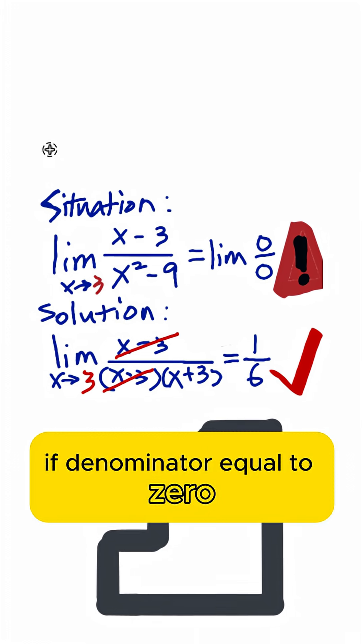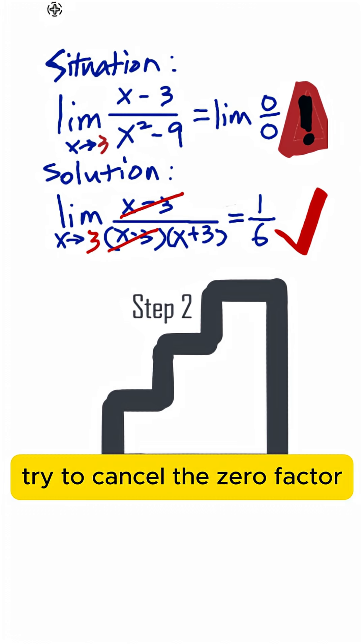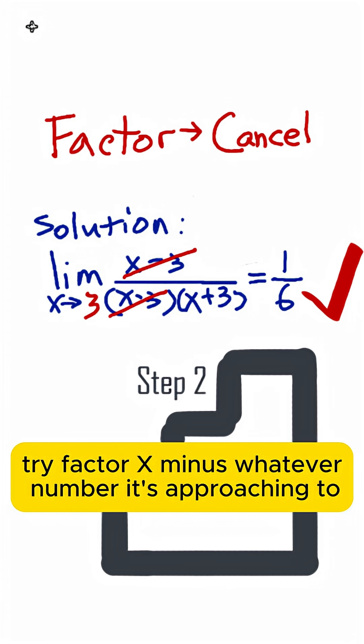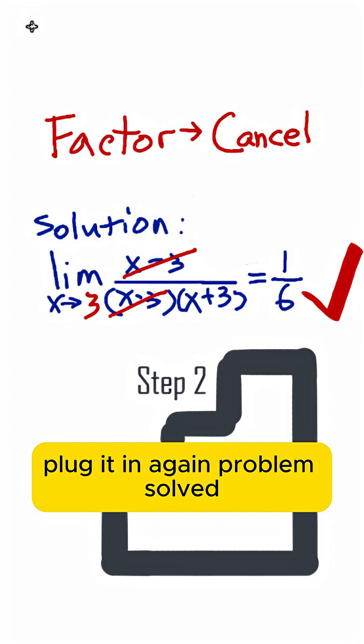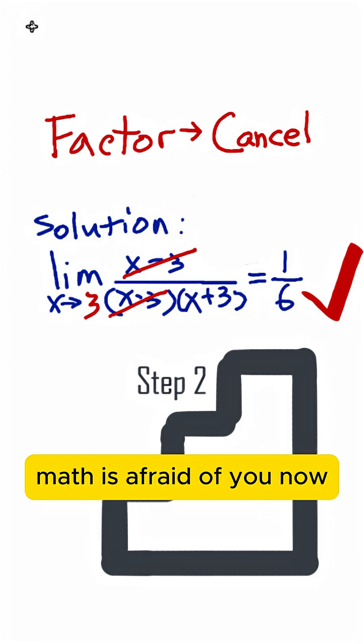Step number two: if denominator equals 0, try to cancel the 0 factor. Try factor X minus whatever number it's approaching to. Boom! Canceled. Plug it in again. Problem solved. Math is afraid of you now.